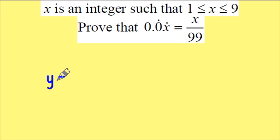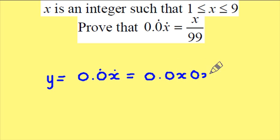So y is equal to 0.0x which is recurring. And in this case it will look like this: 0.0x, 0x, 0x, 0x going on forever. The next point it recurs at after the decimal is here. And to move the numbers along I'm going to have to multiply by 100.